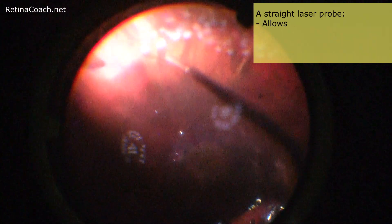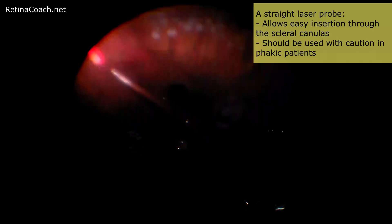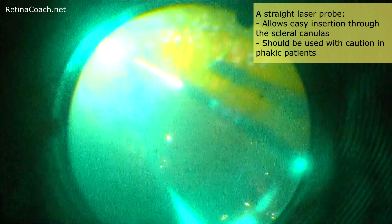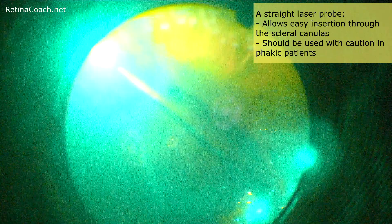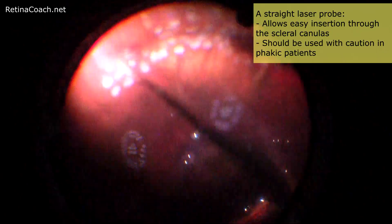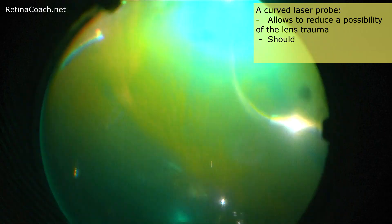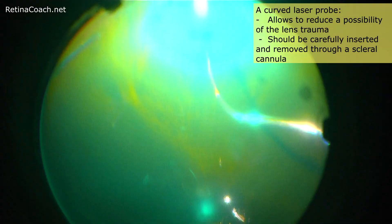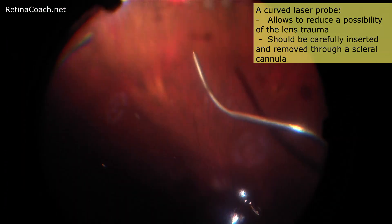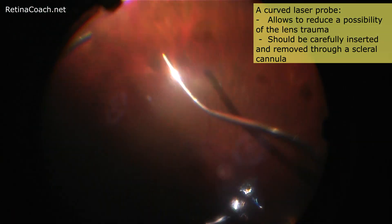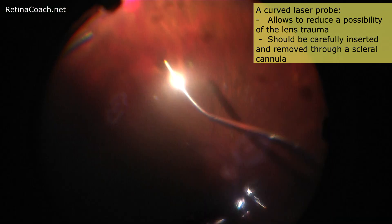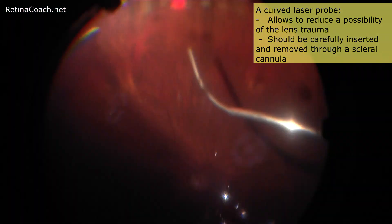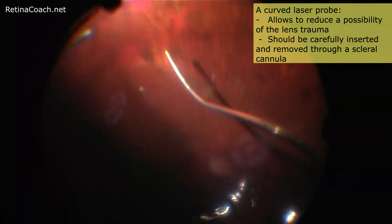A straight laser probe allows easy insertion through the scleral cannulas, but should be used with caution in phakic patients to avoid lens injury. A curved laser probe reduces the possibility of lens trauma when reaching the contralateral side and far periphery, but should be carefully inserted and removed through a scleral cannula as it can be accidentally pulled.